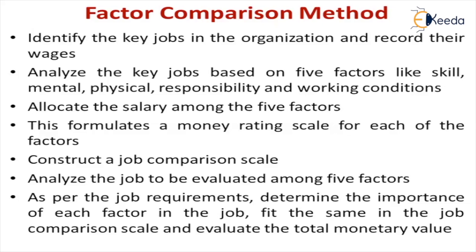For job number one, if skill is more necessary and skill is available, I give the maximum wage. The formulation of that money rating for skill is done for all five factors and tabulated in a job comparison scale. Now take the present or new job that has to be analyzed. Again concentrating on the five factors of the key job, the present job's salary is fixed based on job requirements, the importance of the job, and fitting it into the comparison scale.